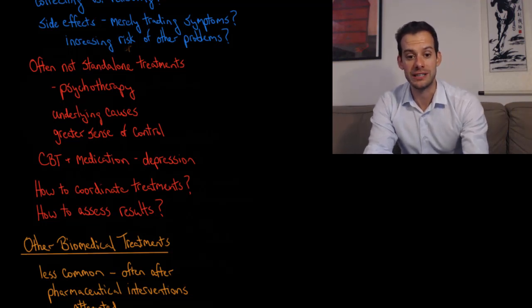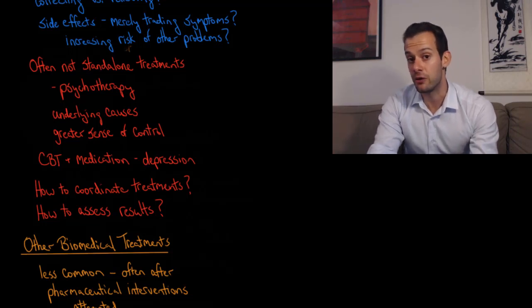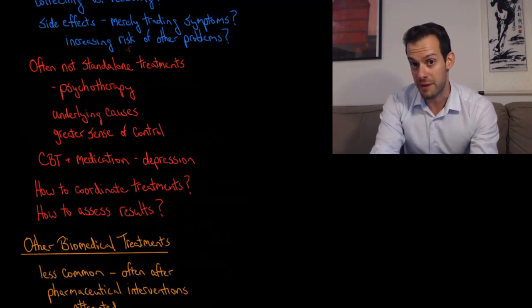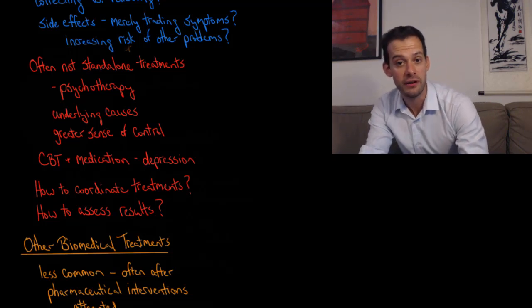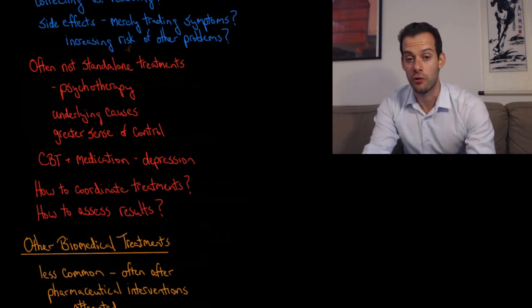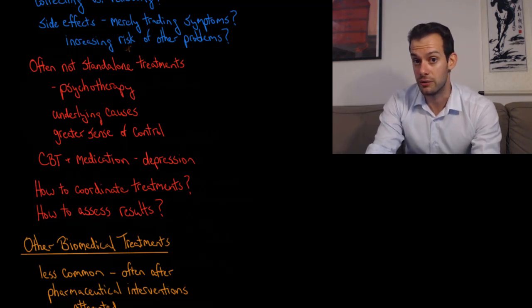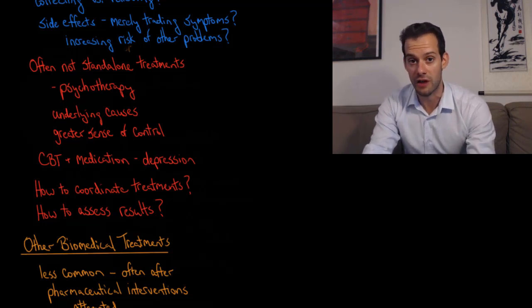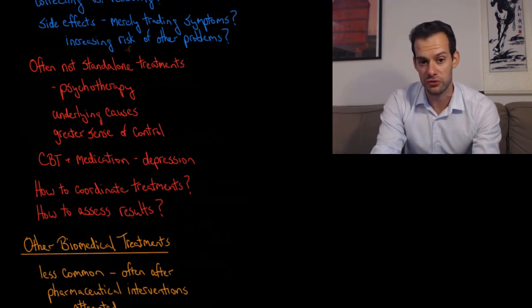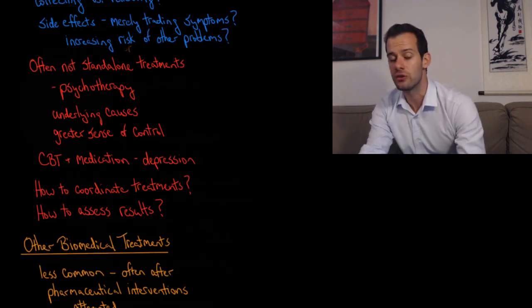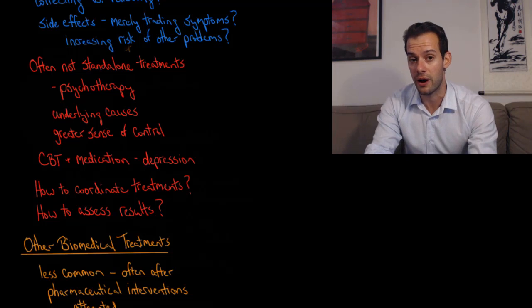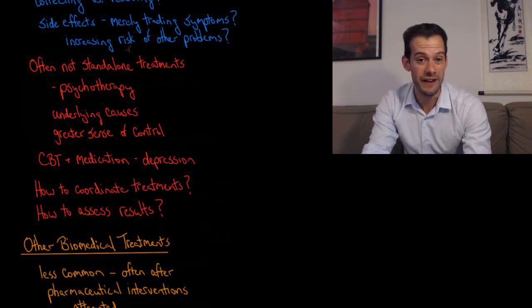That raises some other questions, one of which is how do we coordinate these treatments. You may have somebody who's seeing a therapist to get cognitive behavioral therapy but they're also receiving a prescription from their psychiatrist for an SSRI. It can be hard to know how exactly they should balance these. As I said before, drugs often involve a sort of trial and error process of adjusting the dosage, and that can be hard to do when there's also therapeutic interventions going on at the same time.